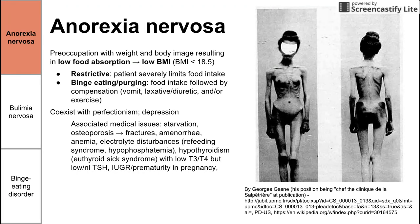A quick way to remember that hypophosphatemia is associated with refeeding: when you're refeeding, the body is making more ATP. If you're making more ATP, you're going to use phosphate groups, leading to hypophosphatemia. That's a quick way to remember that electrolyte disturbance with refeeding.